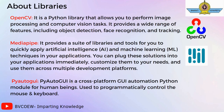Let's understand the functions of these three libraries. OpenCV is a Python library that allows you to perform image processing and computer vision tasks. It provides a wide range of features including object detection, face recognition, and tracking. MediaPipe provides a suite of libraries and tools for you to quickly apply artificial intelligence and machine learning techniques in your applications. You can plug these solutions into your applications immediately, customize them to your needs, and use them across multiple development platforms.